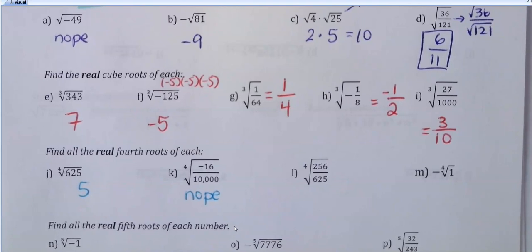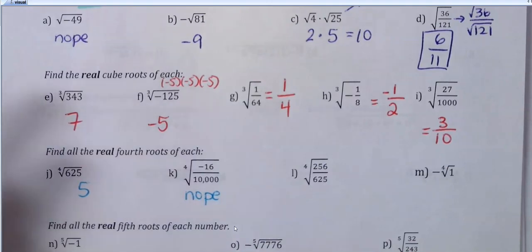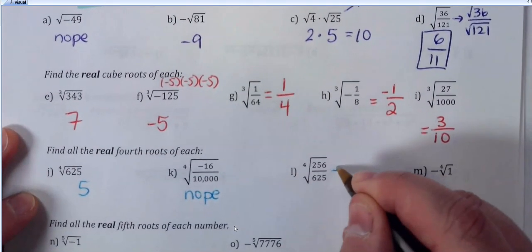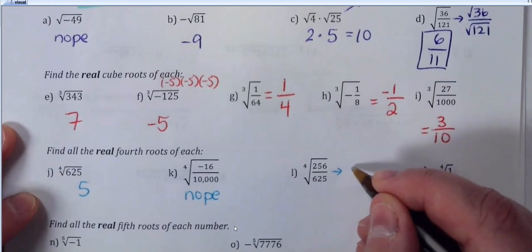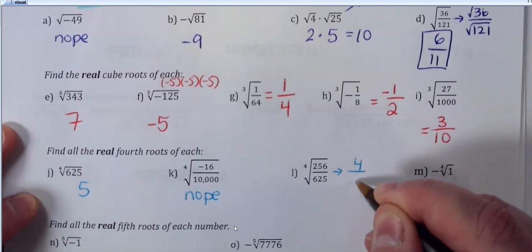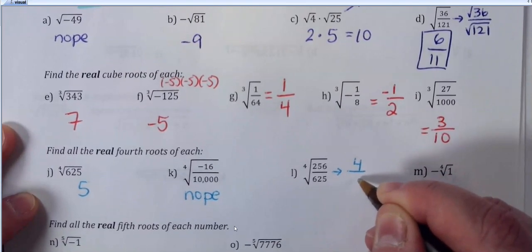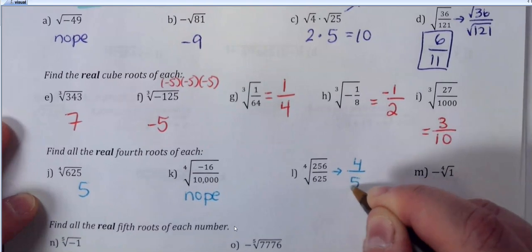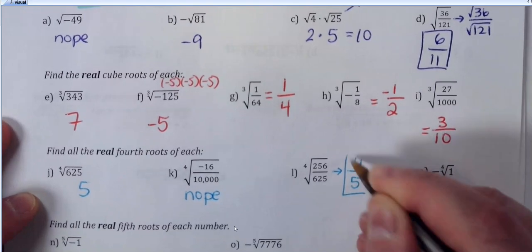Now 256 and 625 — what to the fourth power would be 256, and what to the fourth power would be 625? Look at the list. For 256, the answer is 4; for 625, the answer is 5. Done — four-fifths would be your answer.